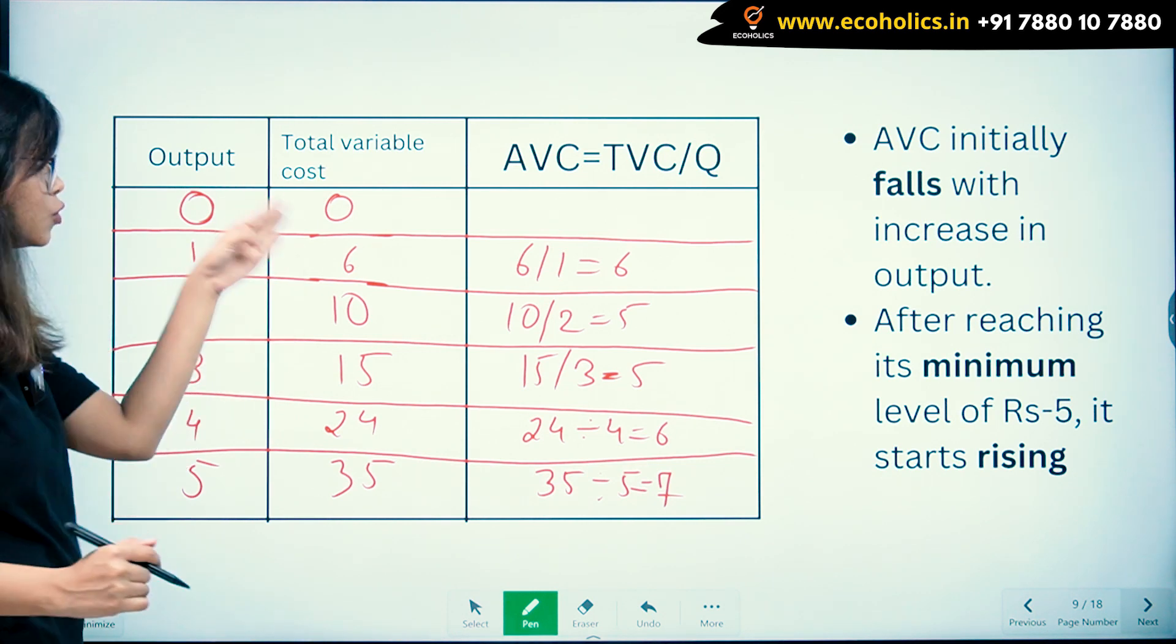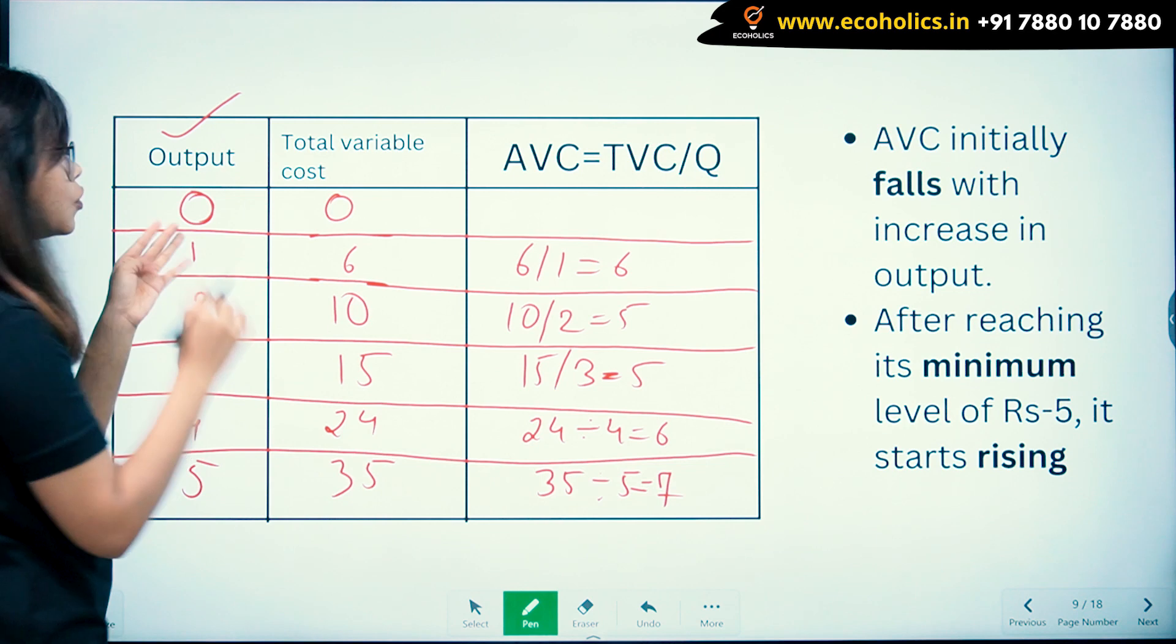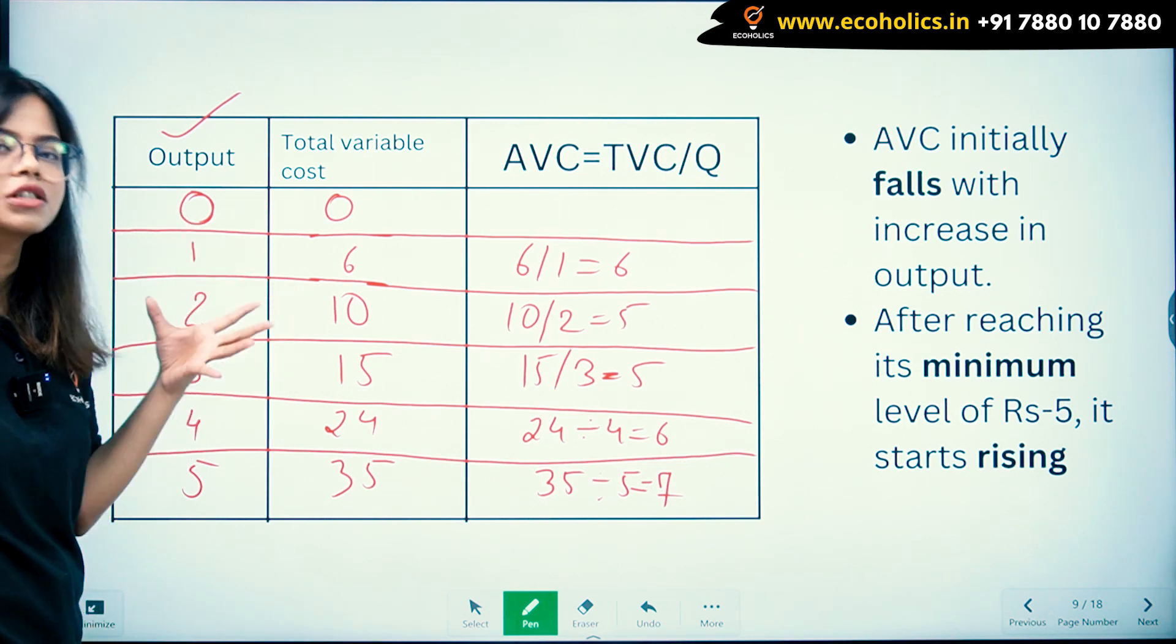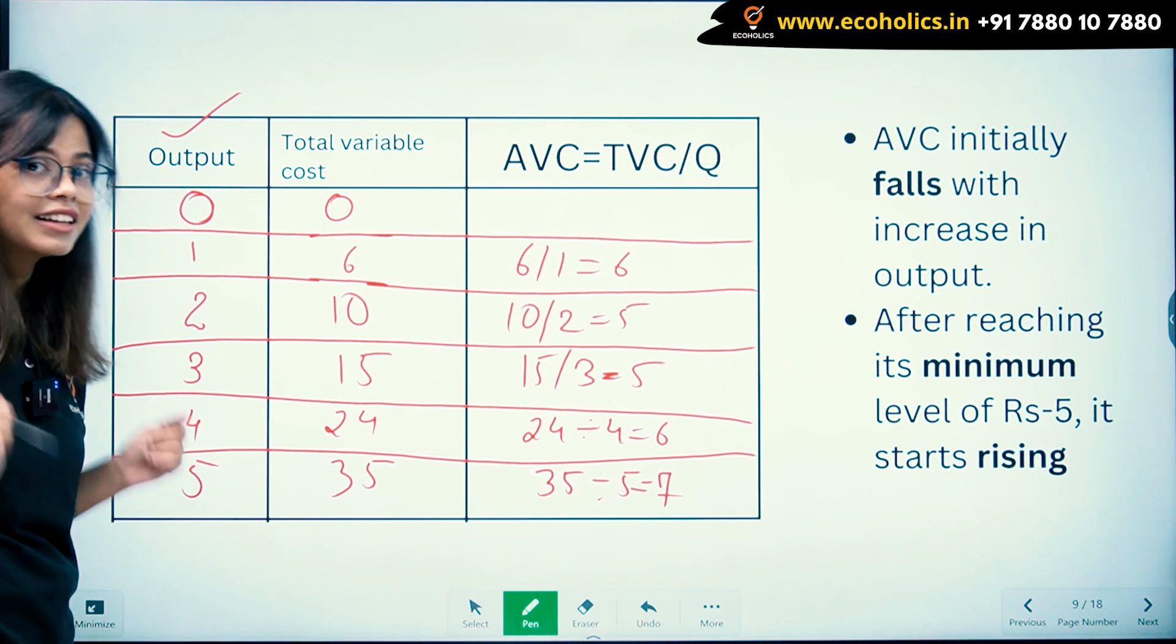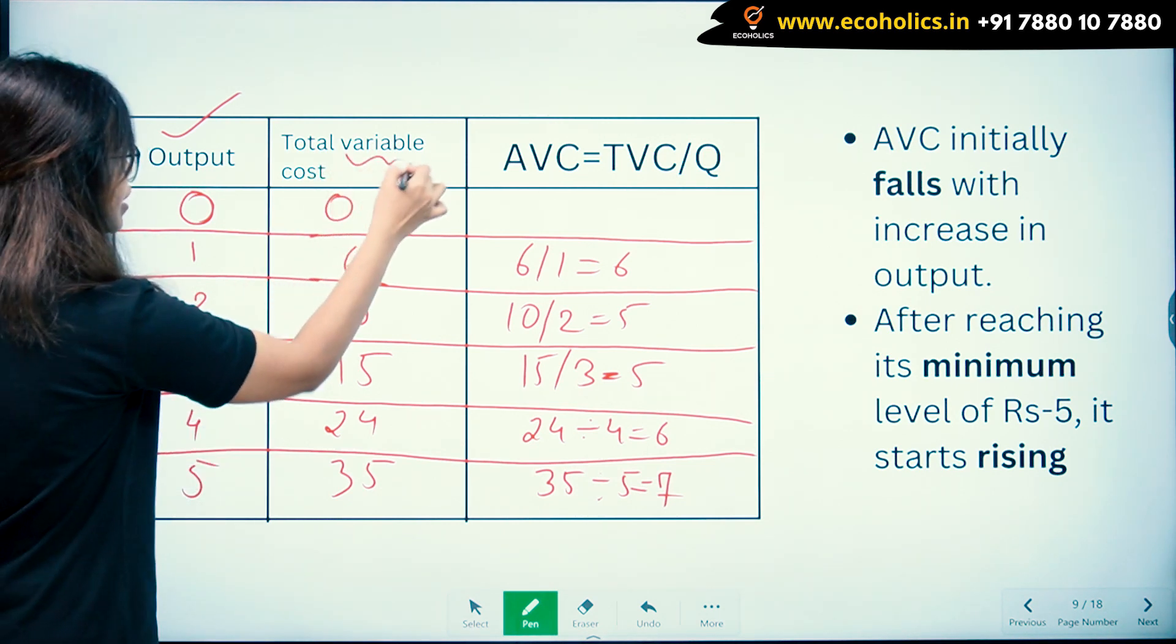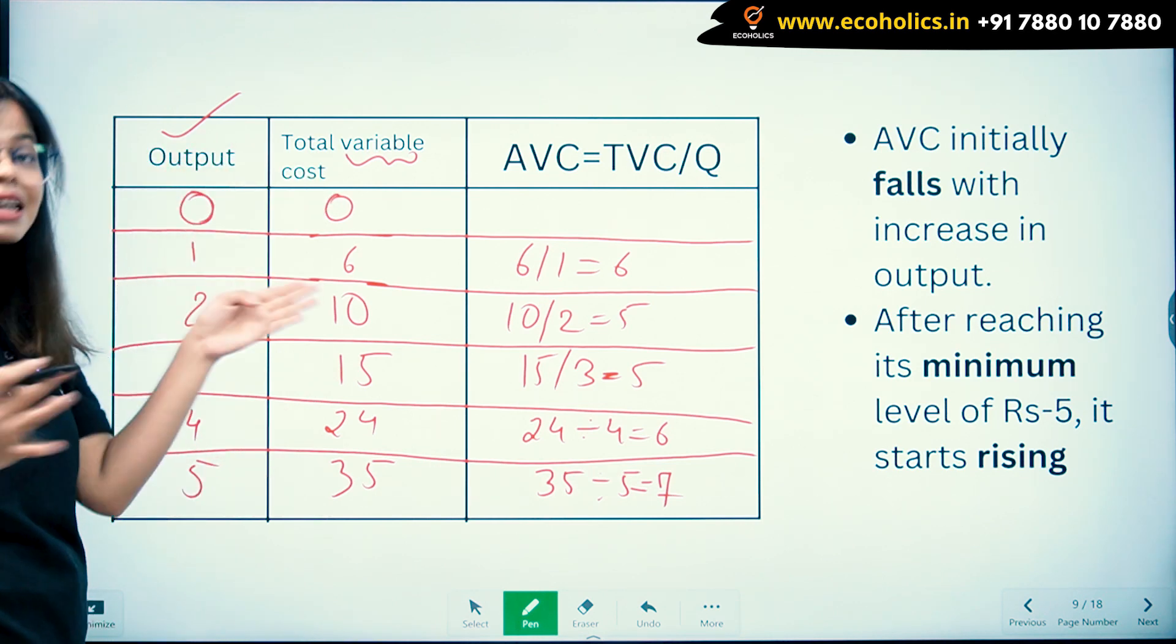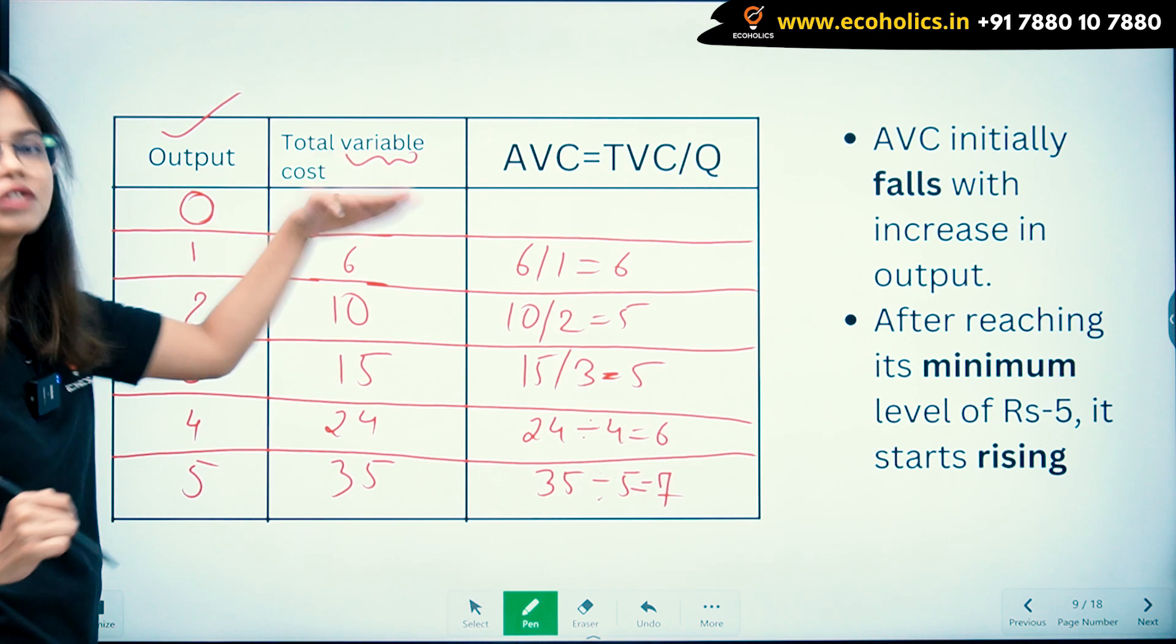Do you have to bear the variable cost when your output is 0? If you say yes, that's not the case—that is the meaning of variable. It is directly related with output, so when your output is 0, your variable cost is also 0.